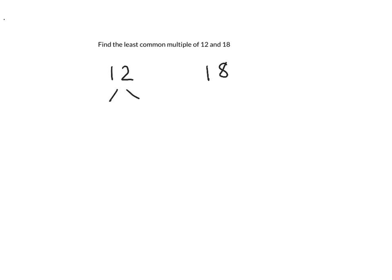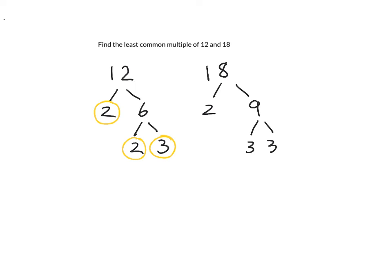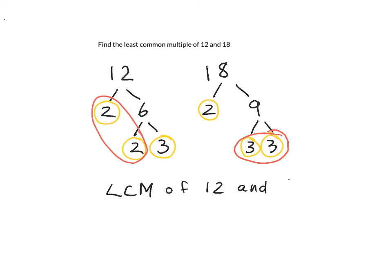The same approach applies to finding the least common multiple — we also use factor trees. For 12: 2 times 6, and 2 times 3, so we circle 2, 2, and 3. For 18: 2 times 9 equals 18; 9 is not prime, but 3 is, and 3 times 3 equals 9, so we circle 2, 3, and 3. Circle whoever has the most factors on each side: 18 has two 3's and 12 has two 2's. So the least common multiple of 12 and 18 is 2 times 2 times 3 times 3, which equals 4 times 3 is 12, and 3 times 12 is 36.